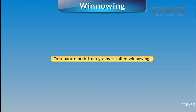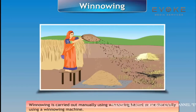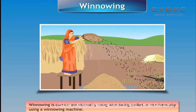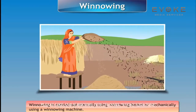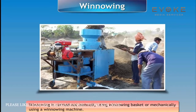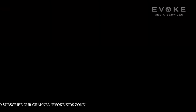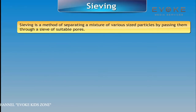Winnowing: The process used to separate husk from grains is called winnowing. Winnowing is carried out manually using a winnowing basket, or mechanically using a winnowing machine.